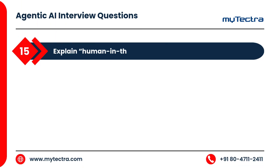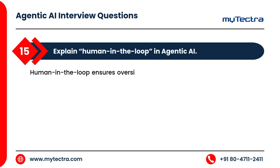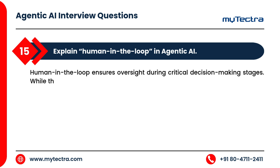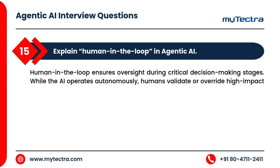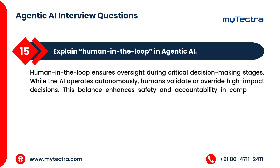Explain human-in-the-loop in agentic AI. Human-in-the-loop ensures oversight during critical decision-making stages. While the AI operates autonomously, humans validate or override high-impact decisions. This balance enhances safety and accountability in complex or high-stakes environments.